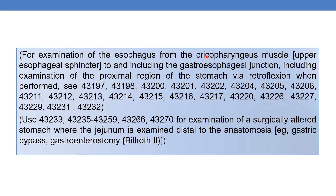Coming to the CPTs of esophagogastroduodenoscopy: for the examination of the esophagus from the cricopharyngeal muscle — that is, the upper esophageal sphincter — and to include the gastroesophageal junction, including examination of the proximal region of the stomach via retroflexion when performed, refer to the following CPTs: 43197, 43232, and use 43233 through 43259, 43266 and 43270 for examination of a surgically altered stomach when the jejunum is examined distal to the anastomosis. For example, in case of gastric bypass, gastroenterostomy, etc.